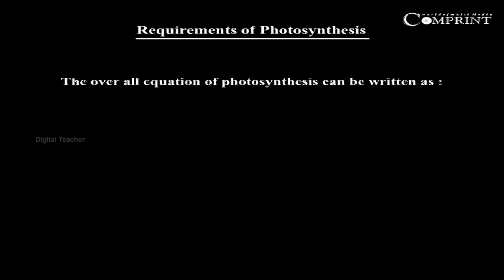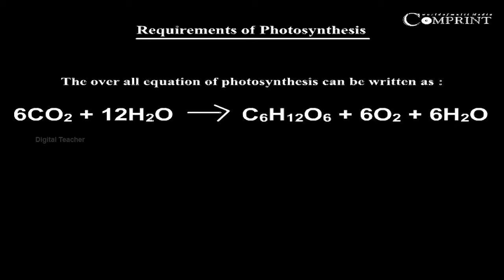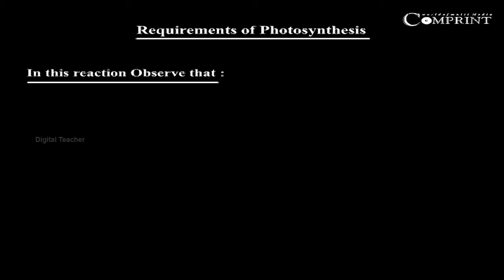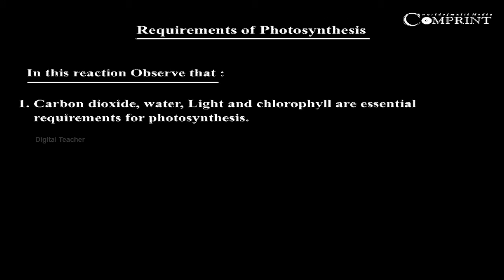The overall equation of photosynthesis can be written as: 6CO₂ + 12H₂O → C₆H₁₂O₆ + 6O₂ + 6H₂O. In this reaction, carbon dioxide, water, light, and chlorophyll are essential requirements for photosynthesis.